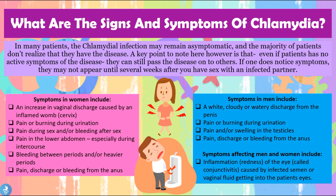Symptoms which may affect men include a white, cloudy, or watery discharge from the penis, pain or burning during urination, pain and/or swelling in the testicles, and pain, discharge, or bleeding from the anus. Symptoms which affect both men and women include inflammation or redness of the eye, called conjunctivitis, which can be caused by infected semen or vaginal fluid getting into the patient's eyes.